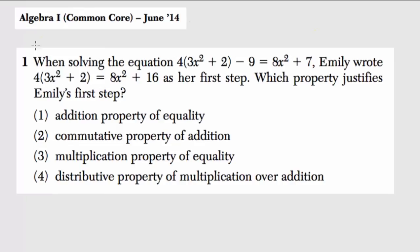Okay, so this problem says that we're solving the equation 4 times 3x squared plus 2 minus 9 equals 8x squared plus 7. Emily wrote 4 times 3x squared plus 2 equals 8x squared plus 16 as her first step. Which property justifies Emily's first step?